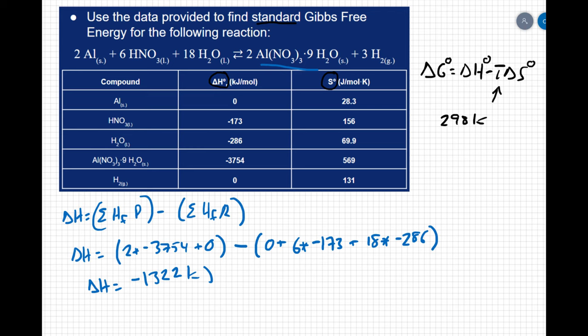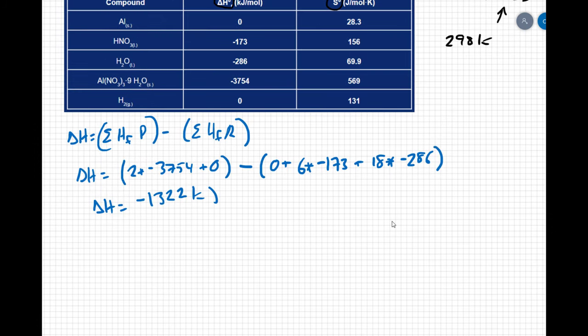So now we're going to do the same thing for our delta S value. I can say my delta S is going to equal the sum of the entropies of my products minus the sum of my entropies of the reactants.